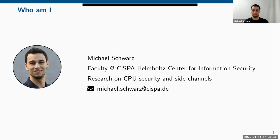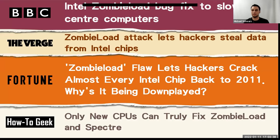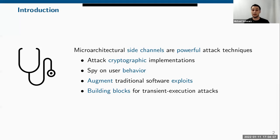You might have seen news headlines like 'Intel Zombie Load bug fix to slow data center computers — only new CPUs can truly fix Zombie Load and Spectre.' Or even on CNN back in 2018: 'Computer chip flaws impact billions of devices — developing story.' So what is all this about?